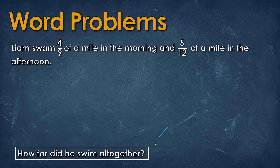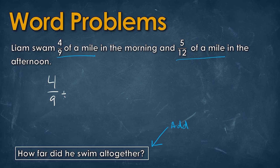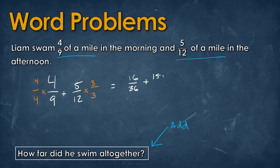Reading the next question, it asks how far did he swim in total — so it's addition. He swam 4 over 9 of a mile in the morning and 5 over 12 of a mile in the afternoon. Setting up 4 over 9 plus 5 over 12, we know the least common denominator is 36. We multiply the first fraction by 4 on top and bottom and the second by 3 on top and bottom, giving us 16 over 36 plus 15 over 36. Adding that together gives an answer of 31 over 36.